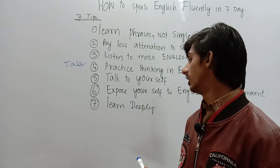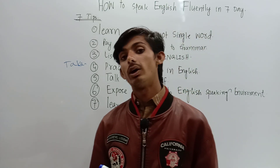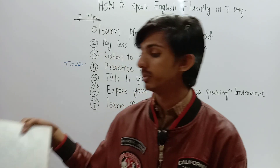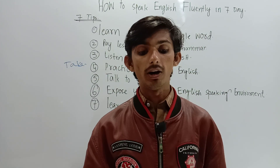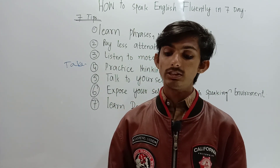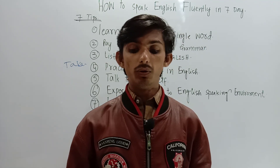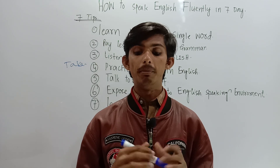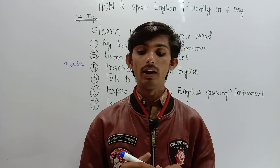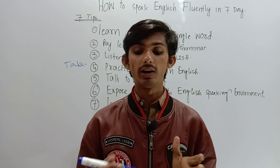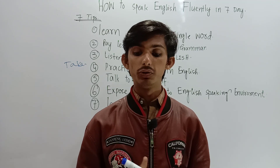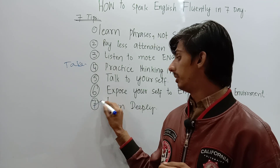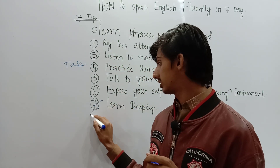Number 7 is: learning deeply. Make 14 English topics and practice daily on two topics. For example, tell about your family, describe yourself easily, and learn deeply. That is what you have to do.